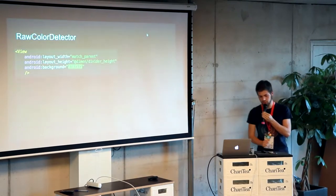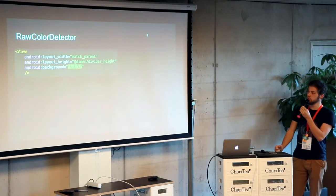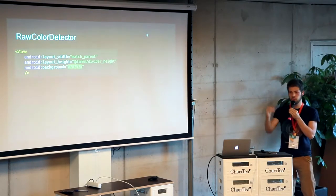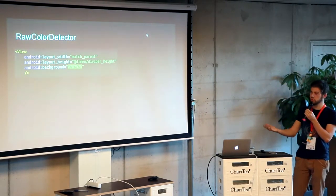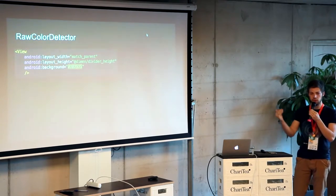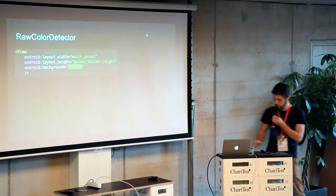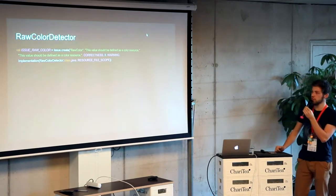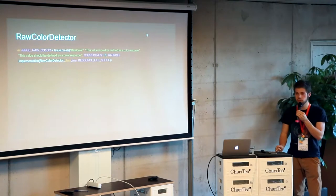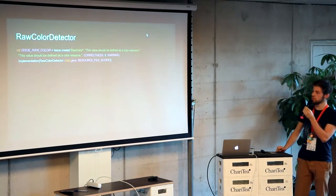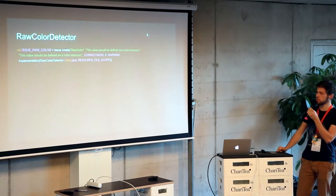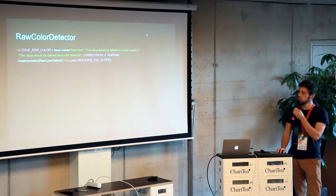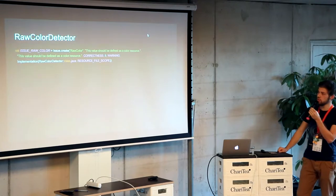Let's look at the first check - it's a resource check. It's going to detect when you use a color without a resource reference, because you might want to have all your colors in one file, so if you switch to implementing dark theme you only need to look through one file. The first thing we need to do is create an issue. The first parameter, raw_color, is the ID - that's also the one used if you want to suppress it. Then there's a title and description. Next is correctness, the category - there are a bunch defined like correctness, security, performance. The next one is the priority level between 1 and 10, followed by the severity - is it an error, fatal, or a warning?